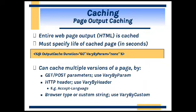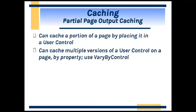Here, 'VaryByHeader' is used for holding HTTP header content. Similarly, 'VaryByCustom' can be used to store what type of browser we are using, or any custom string. Similarly, 'VaryByControl' can be used for holding a particular control, so a portion of the page can be placed into a user control and that control information can be stored as cached information using the attribute 'VaryByControl'.